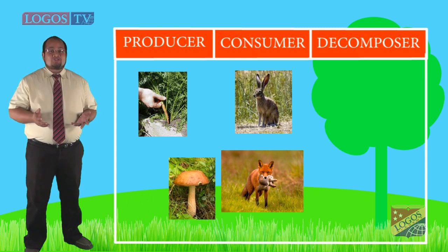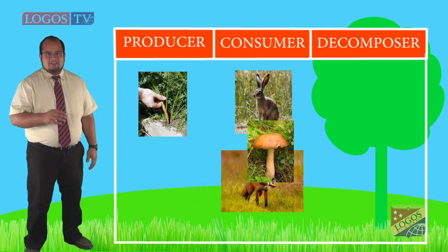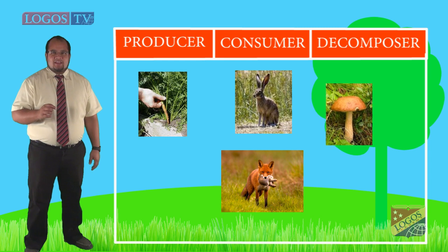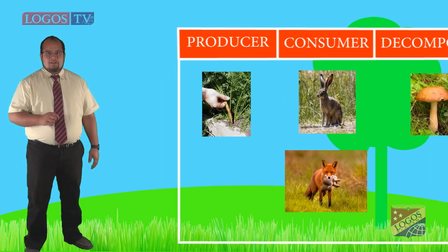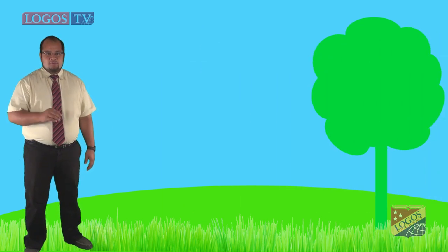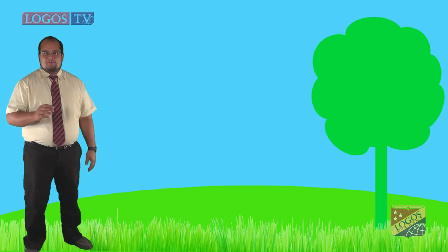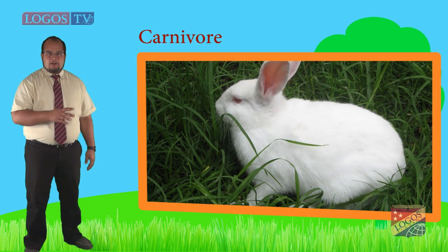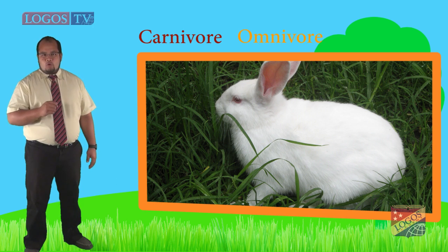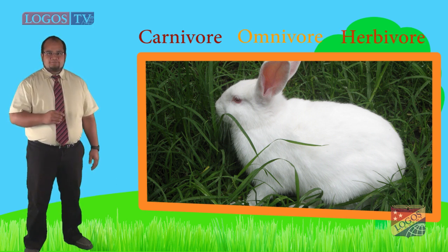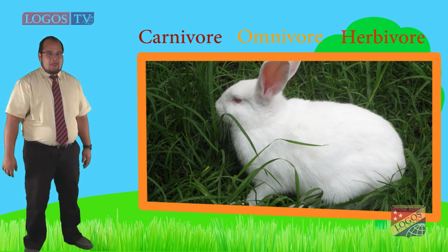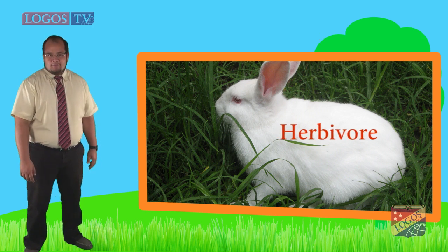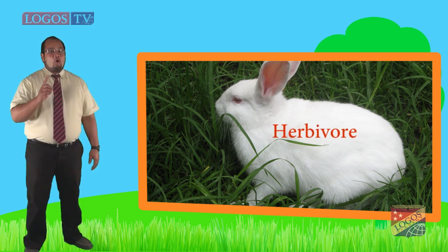Now let's see if you remember. We said the rabbit and the fox are consumers, but what kind of consumers are they? Is the rabbit a carnivore, an omnivore, or a herbivore? I'm sure you know a rabbit is a herbivore. Rabbits eat only plants. What about the fox? The fox is a carnivore.